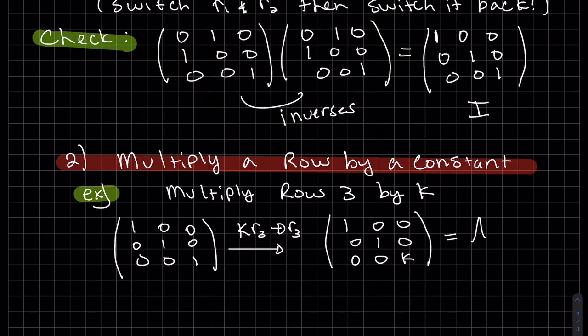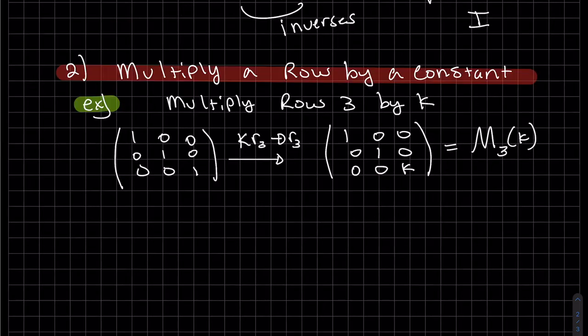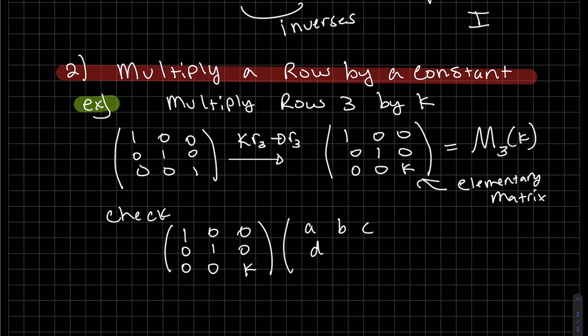And we call this M for multiple row three by K. So this is our elementary matrix. And let's check it. The result of it. You can multiply these two. And you'll see, you get A there, B, C in the first row.